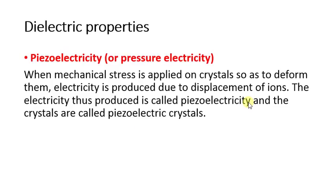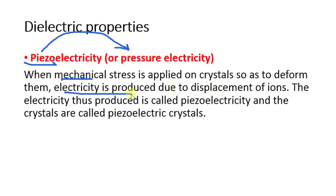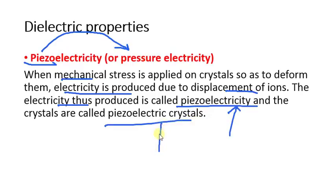Now, dielectric properties — two types: piezoelectric and pyroelectric. The word 'piezo' signifies pressure. Piezoelectricity is generated when mechanical stress is applied to certain crystals, causing them to deform. Due to this deformation, displacement of ions occurs and electricity is produced. The electricity produced is called piezoelectricity and the crystals are called piezoelectric crystals.